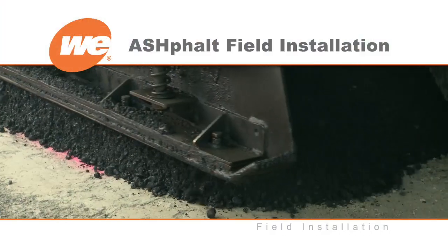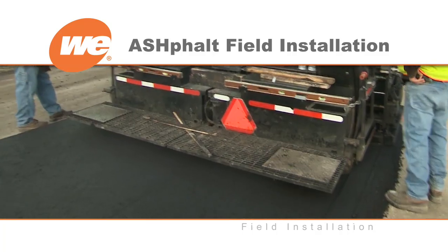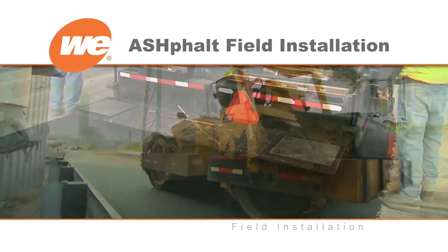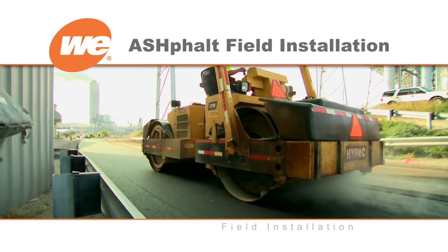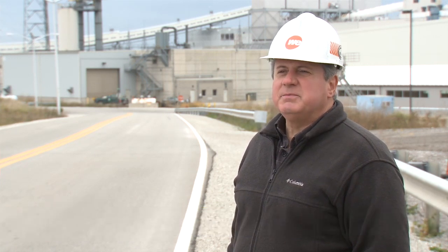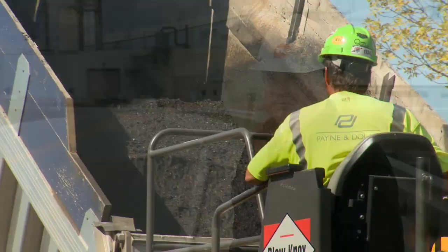One key element of the research project is a field installation of fly ash asphalt at the WE Energies power plant in Oak Creek, Wisconsin. The installation covers about a mile of paving for the plant road, which is a heavy haul road for trucking. We thought it would be a good in-the-field test for this type of asphalt paving using fly ash. Laboratory work is fine to prove our concept, but ultimately you have to have something on the ground in use in the field.